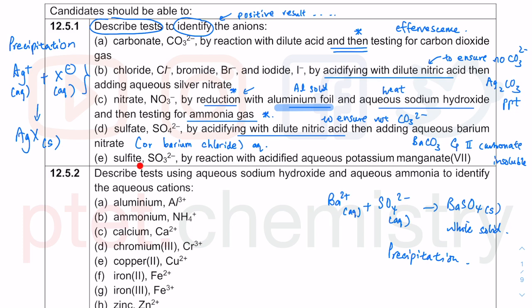Sulfite versus sulfate — both differ in naming, formula, test, and result. To distinguish them, we use acidified aqueous potassium manganate(VII), KMnO₄, with H⁺. This reagent gets decolorized as a result of a redox reaction. Redox involves reduction and oxidation — this will make more sense after we cover the next topic. For now, just know the test and the positive result.